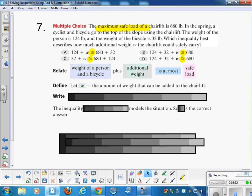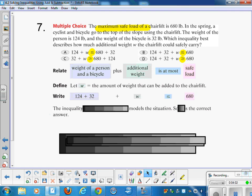It says let W equal the weight that can be added to the chairlift. And you can use any variable you want, but you see in the multiple choice answers that they used a W. So here we go. We have that weight of a person and the bicycle, in this case 124 plus 32. Add to that the weight that could be added to the chairlift. And that at most really means less than or equal to, and you know that that's the way it has to be to keep the chairlift safe. Less than or equal to, 680 pounds. So B is the correct answer.